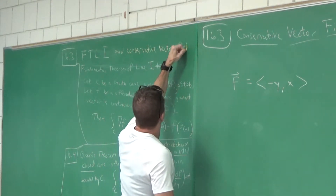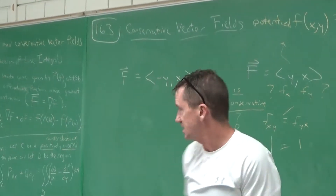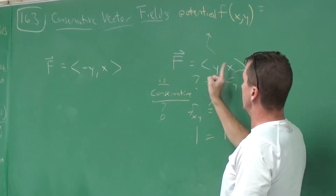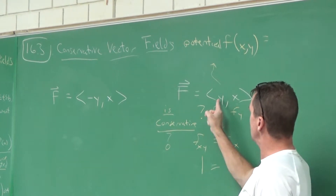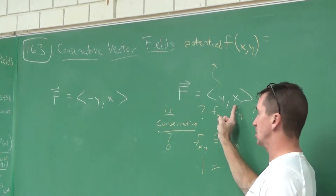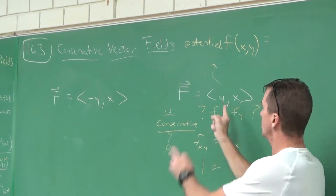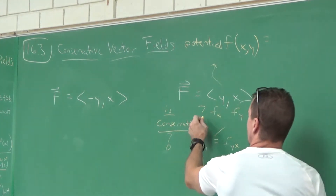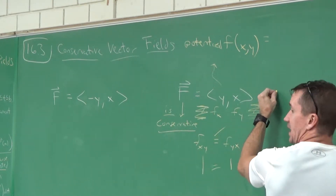This section is really about conservative vector fields. A conservative vector field means F equals the gradient vector of some function f. So you check: is the derivative of the x-component with respect to y equal to the derivative of the y-component with respect to x? Yes — so we can take off the question marks. This vector field is conservative.